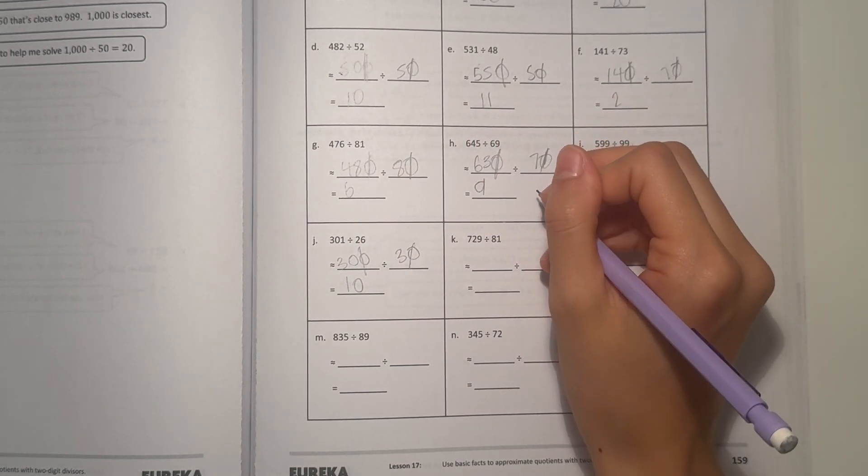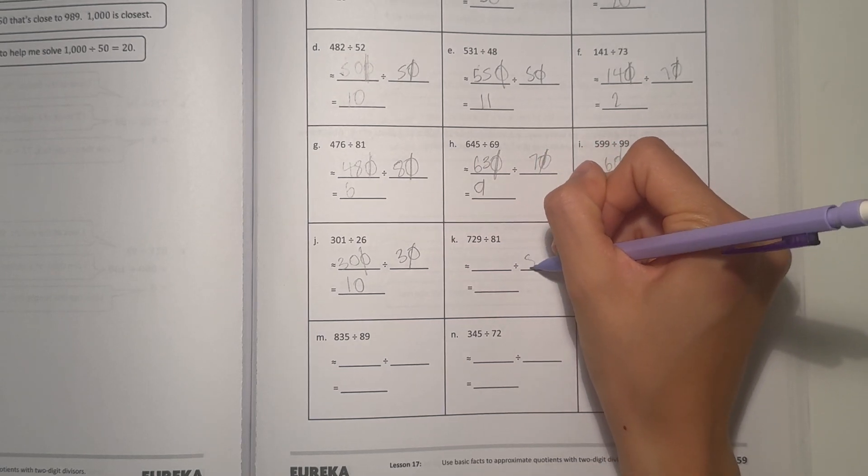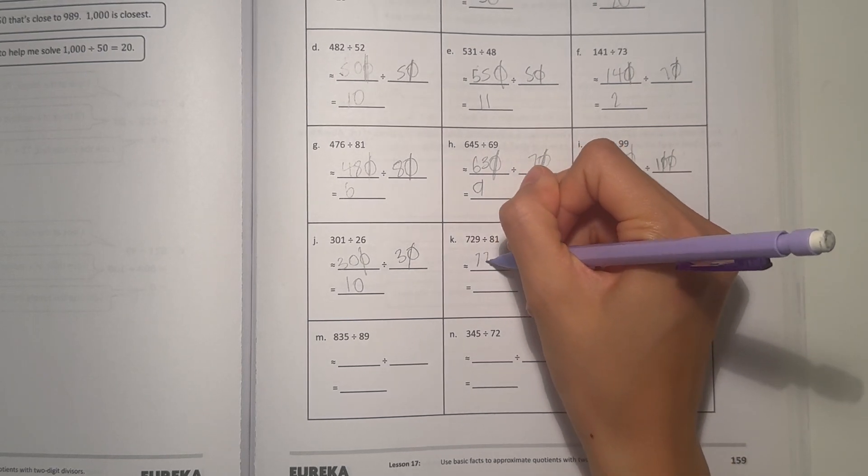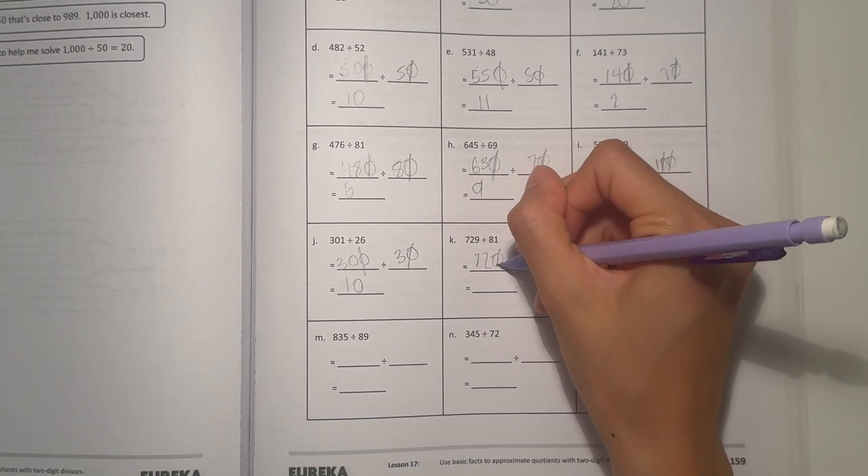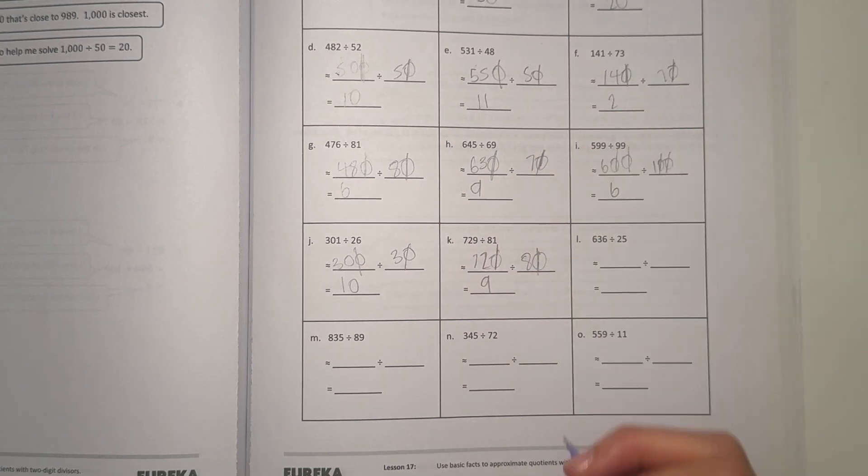All right, let's see. K, 729 divided by 81. First round 81, that rounds to 80. And 729, 720 is the number that 80 can go into. So we cross off the zeros. 72 divided by 8, that's 9. So 9 is our answer.